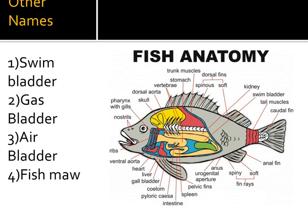The swim bladder is also known by various names: gas bladder, air bladder, or fish maw. Fish maw is the dried swim bladder of large fishes such as sturgeon, and it is exalted in the Chinese community as a delicacy. It is also a good source of collagen, used in the food industry to create water-resistant glue. Its spongy texture absorbs the flavors of other ingredients, and fresh fish maw is cleaned, dried, and occasionally deep-fried.